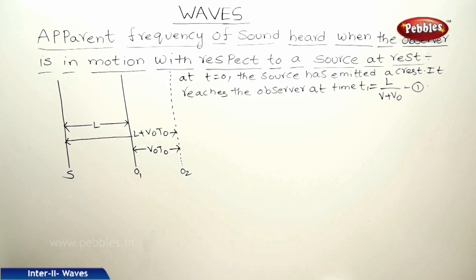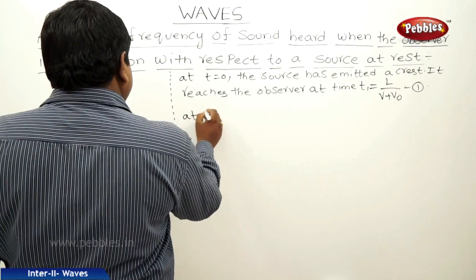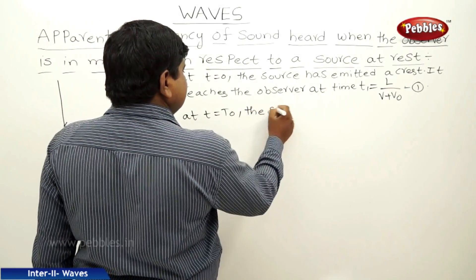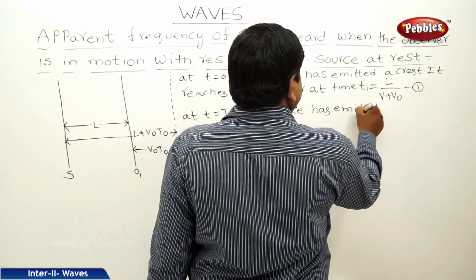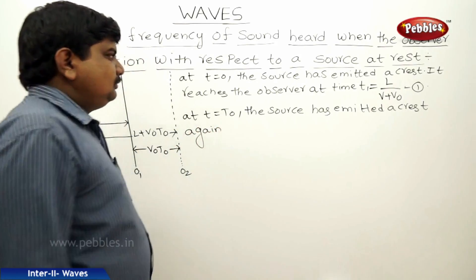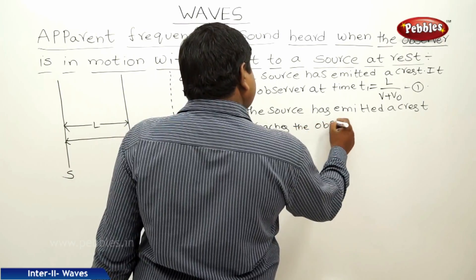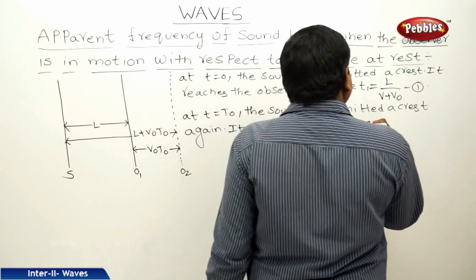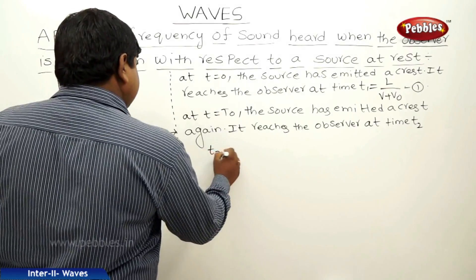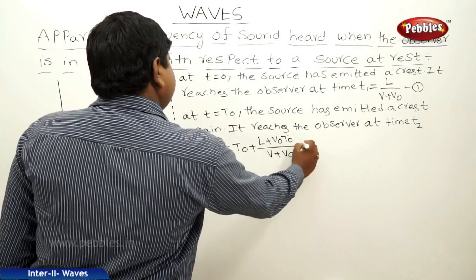After that, at t = T0, the source releases the crest again. It reaches the observer at time T2. So T2 = T0 + (L + V0·T0) / (V + V0). This is equation 2.